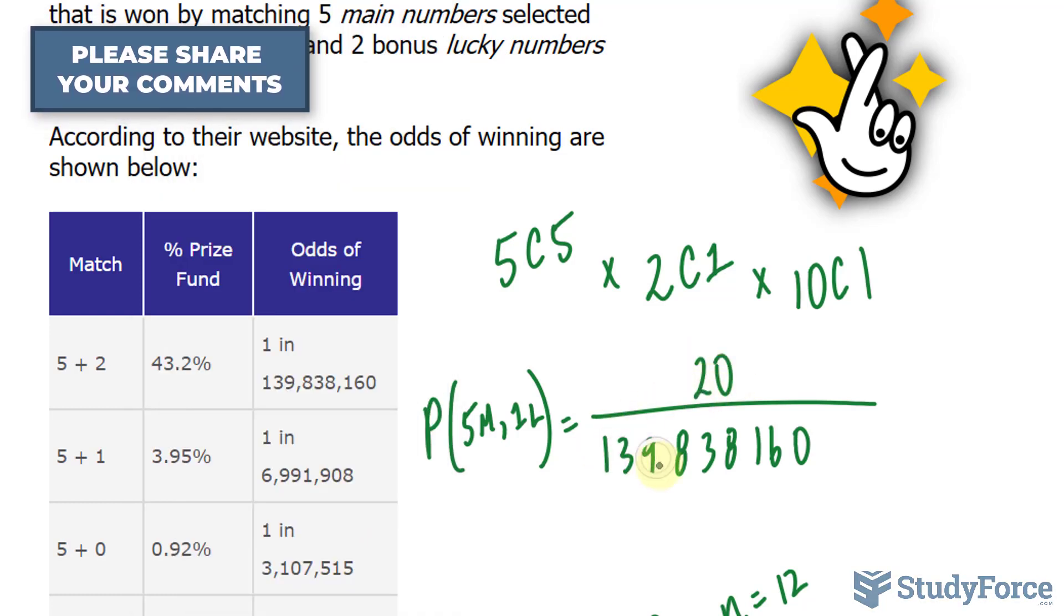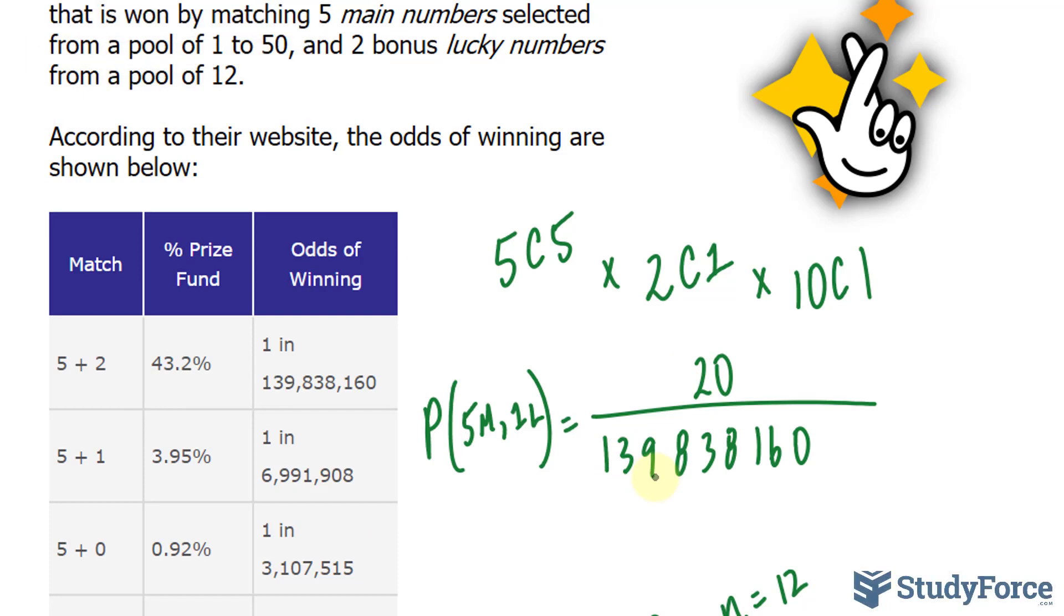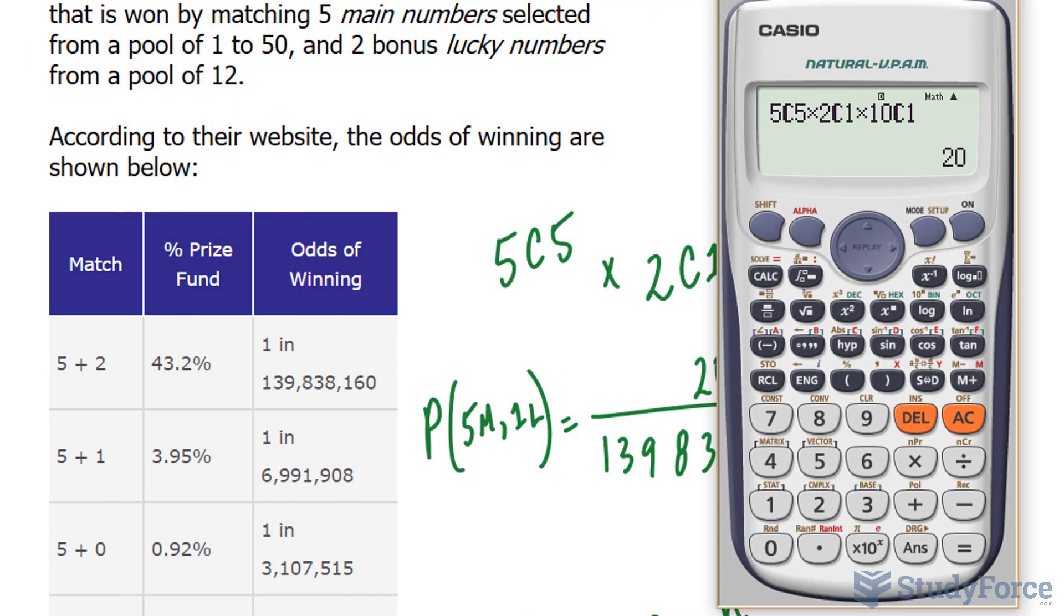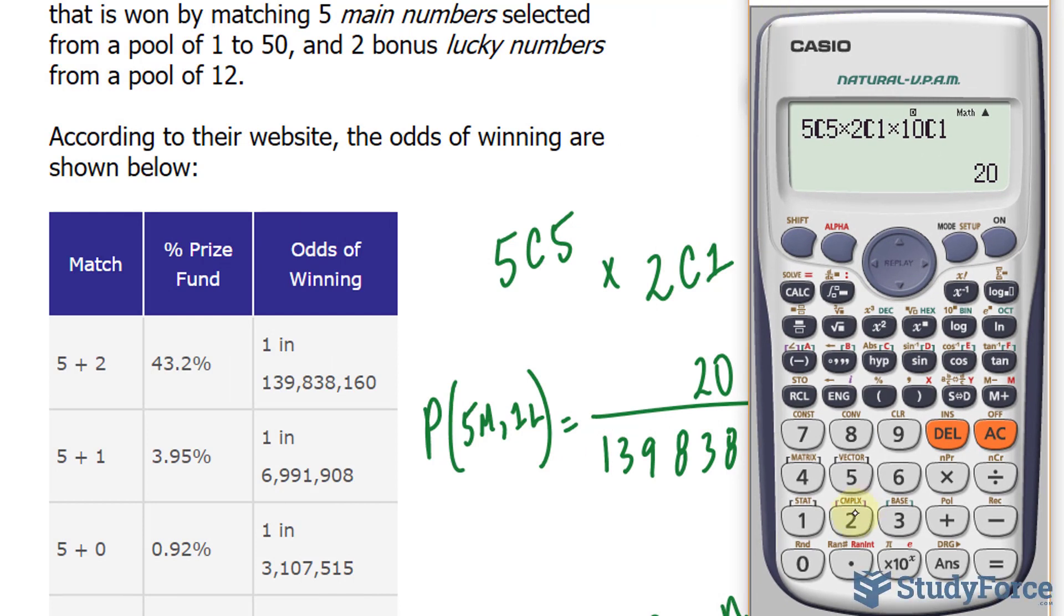So 20 divided by 139 million. Let's see if that matches what the website reports. So 20 divided by the number we found earlier, which was 139,838,160, and we get 1 in 6,991,908, which is exactly what was reported on their website.